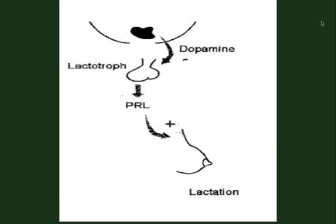Prolactin is made by lactotrophs, located in the lateral area of the anterior pituitary, as you can see in this drawing. Prolactin is regulated through inhibition from the hypothalamus by dopamine, designated DA, coming from that area. It is positively regulated by TRH, which is thyrotropin-releasing hormone. Understanding these regulatory relationships will help you remember the causes of hyperprolactinemia.